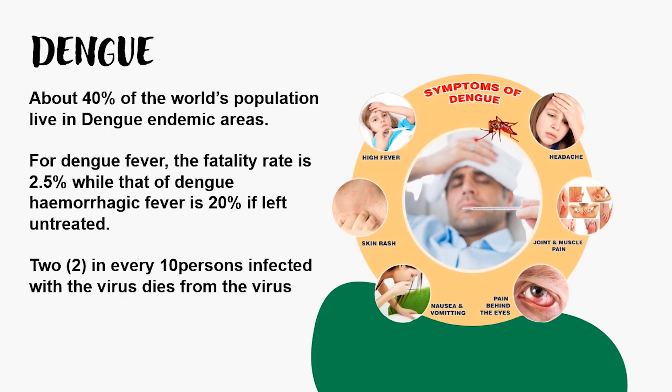Dengue: About 40% of the world's population live in dengue endemic areas. For dengue fever, the fatality rate is 2.5%, while that of dengue hemorrhagic fever is 20% if left untreated. 2 in every 10 persons infected with the virus dies from the virus.